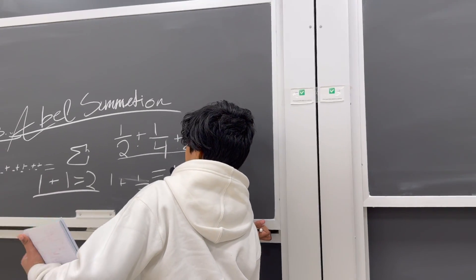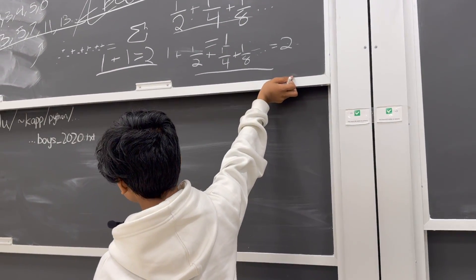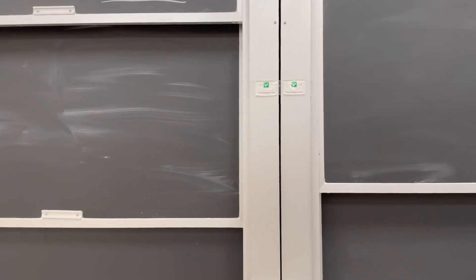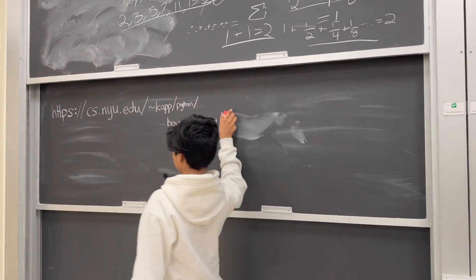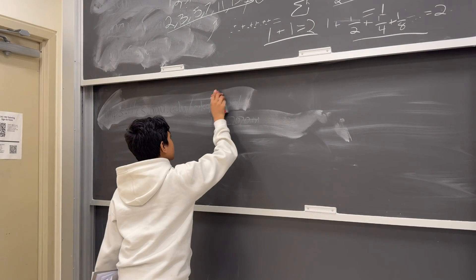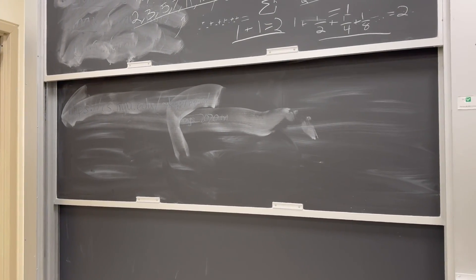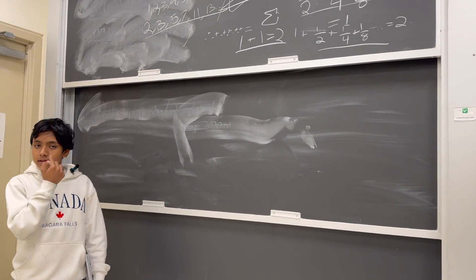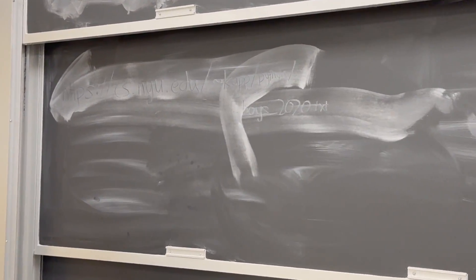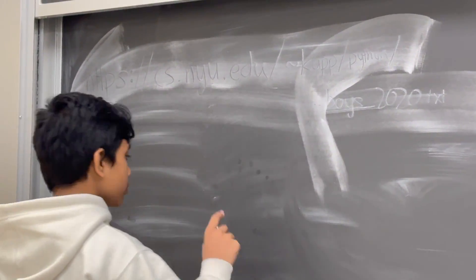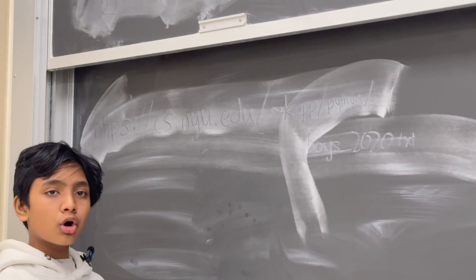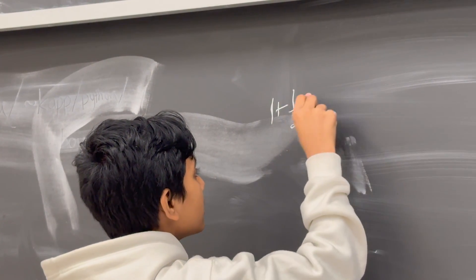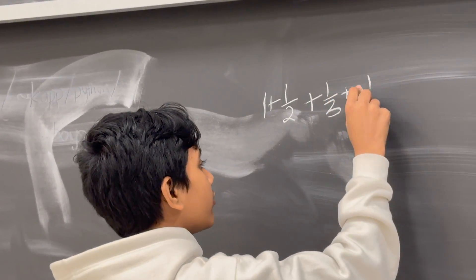All right. So, that's what summation in general is. So, what is Abel summation? Well, there are some series that we call divergent because we cannot sum them up. One very surprisingly divergent series is something known as the harmonic series, or the inverse of all the natural numbers: 1 plus 1/2 plus 1/3 plus 1/4, etc.